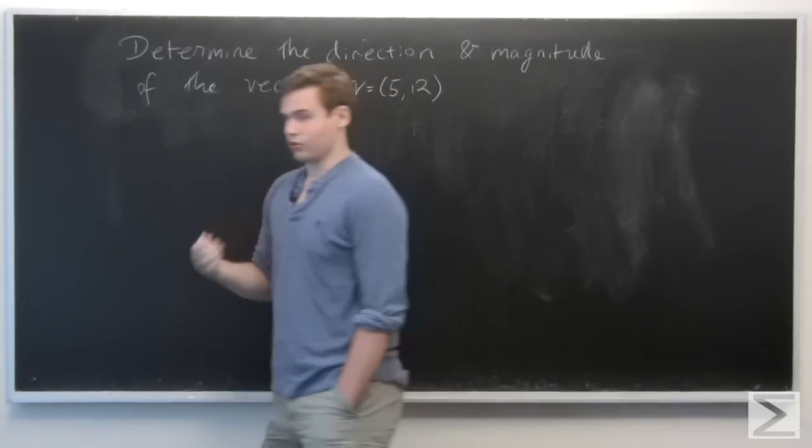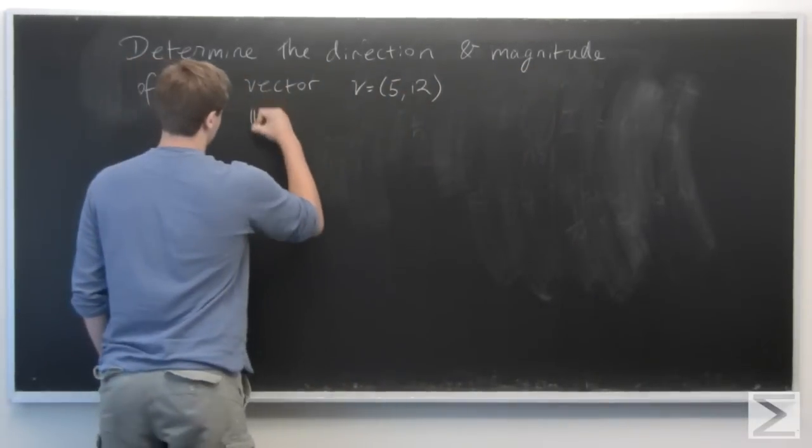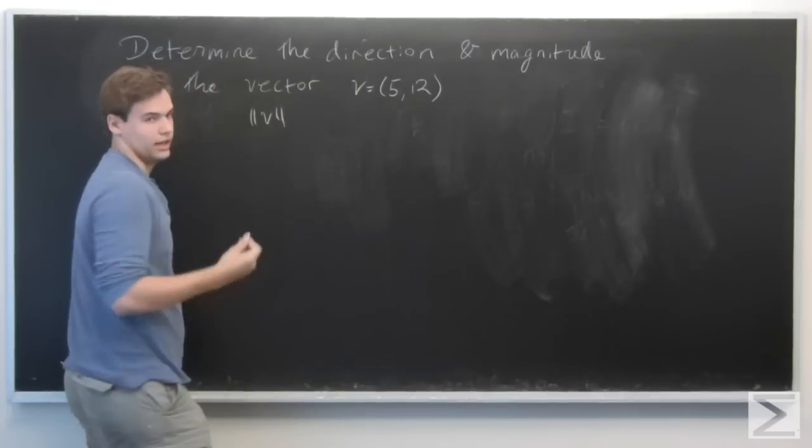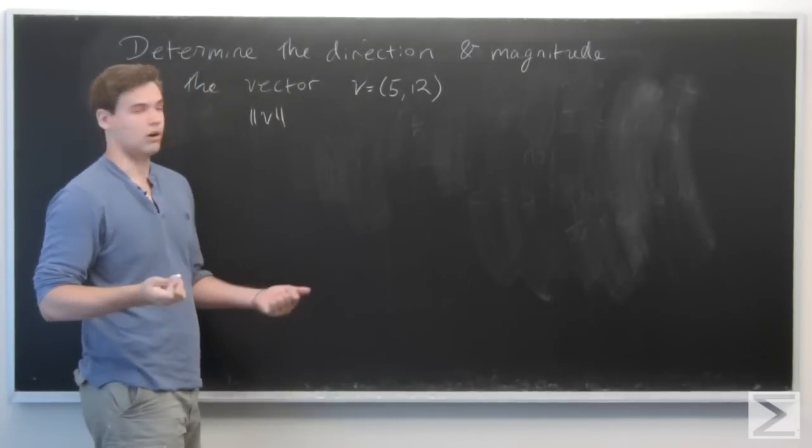So we begin by finding the norm of the vector. This is just done by using the ordinary Pythagorean theorem in R2.